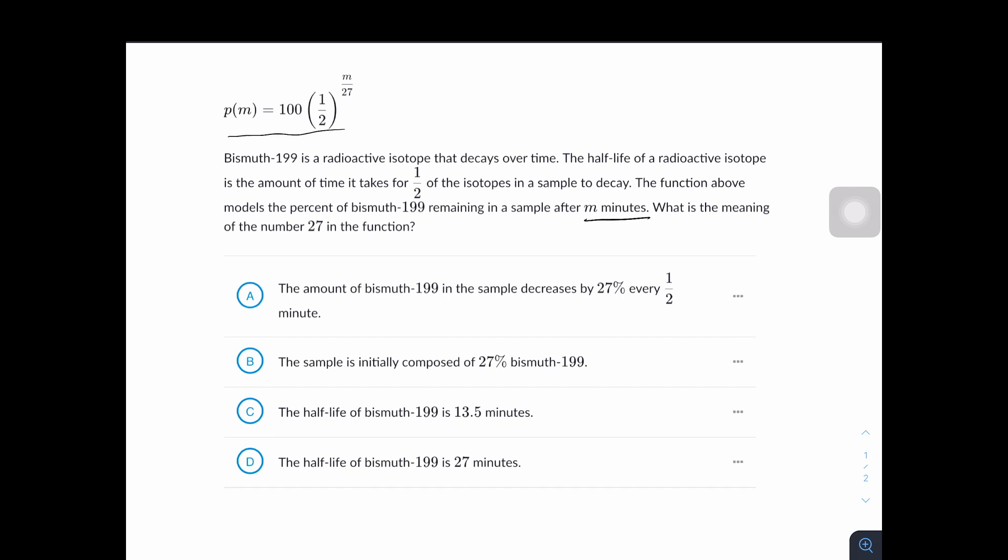So we're given this function right here modeling the decay of bismuth 199 and they want us to find what 27 in this function means. The 27 in this function is the half-life of bismuth 199. How do I know this? It's because it says that the half-life of a radioactive isotope is the amount of time it takes for one half of isotopes in a sample to decay.